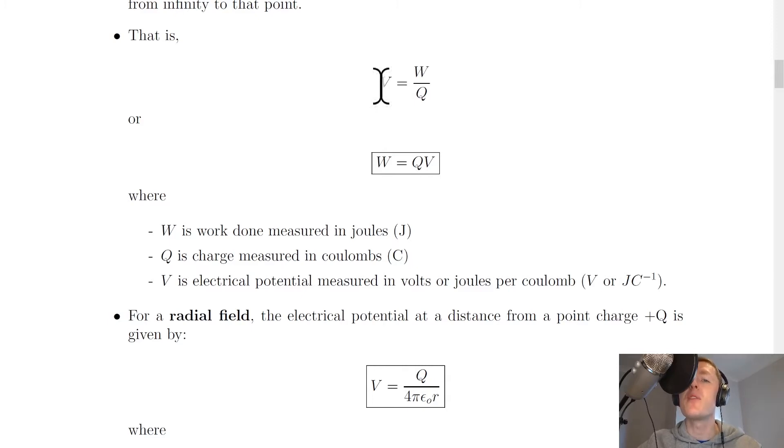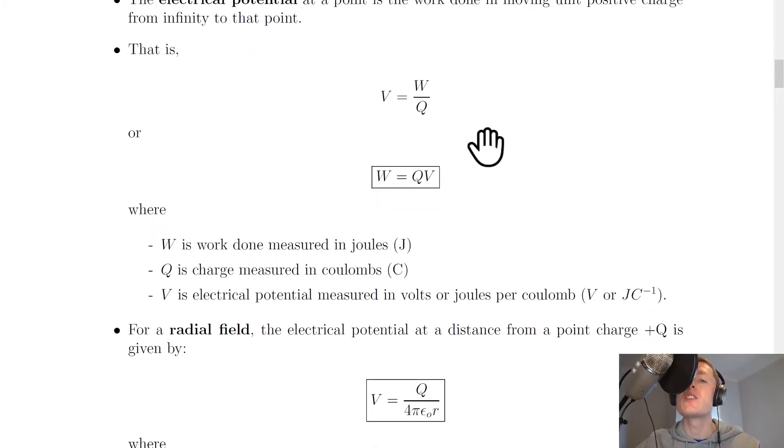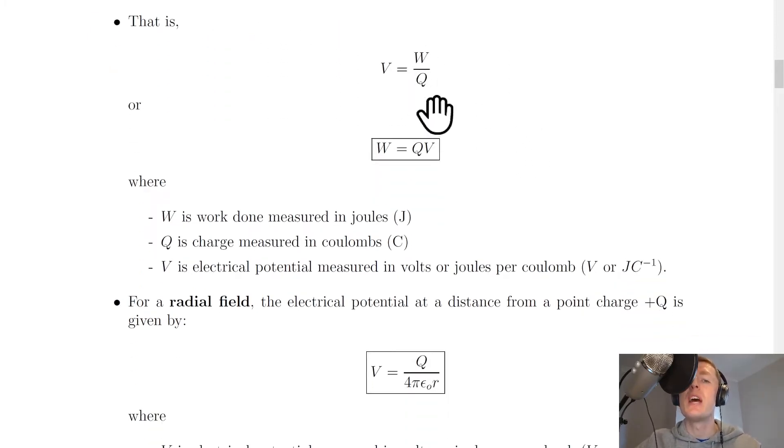If we put our definition into symbol form, we have our electrical potential or electrostatic potential V is equal to the work done W divided by the charge Q. So it's the work done in moving unit positive charge from infinity to that point. So we have V equals W over Q. And we can rearrange this to get this equation here, W equals QV.